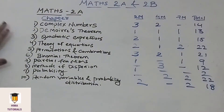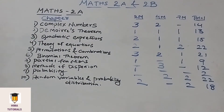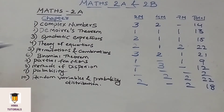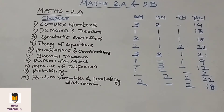If you observe the weightage of Maths 2A, the weightage is more for Theory of Equations, Permutations and Combinations, Probability, and Random Variables and Probability Distribution. If you prepare Probability and Random Variables and Probability Distribution, then you can easily score 40 marks. And if you also prepare the 4th and 5th chapters, then you can easily score 43 marks. Students who have started preparing for the examination will have a great advantage by going through this Weightage Distribution.